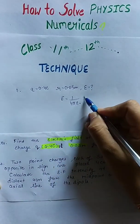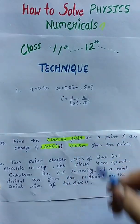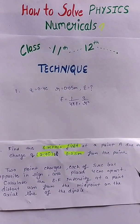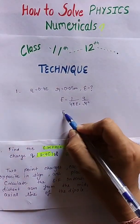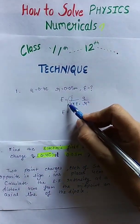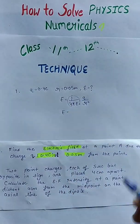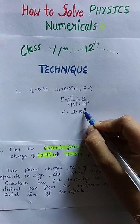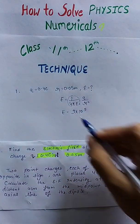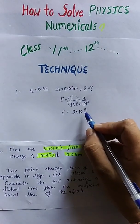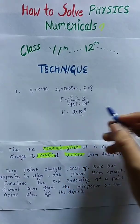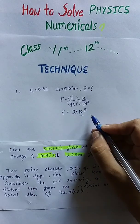This is the required formula which we have to use in this question. What is the value of 1 upon 4 pi epsilon naught? The value is 9 into 10 power 9. We can simply put this value into the formula if we know it, otherwise we cannot solve this question easily.